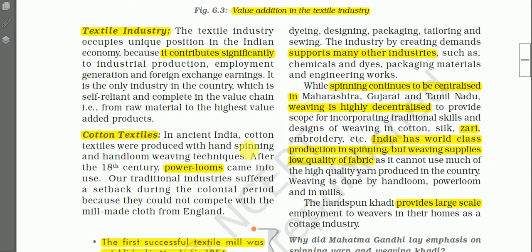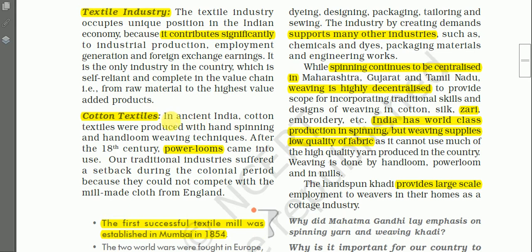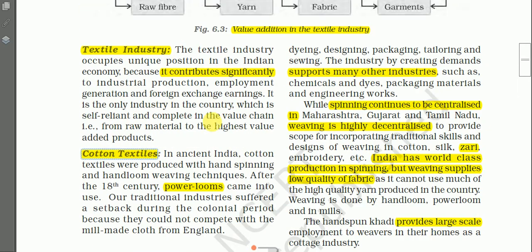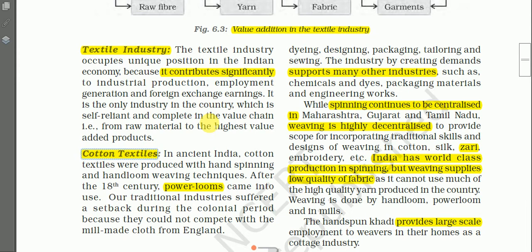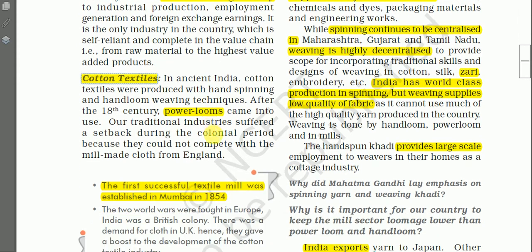Cotton textile is one of the types of textile industry. In ancient India, cotton textiles were produced with hand spinning and hand loom weaving techniques. Hand loom weaving was done in every household, and it is still practiced today. After the 18th century, power looms came into use.